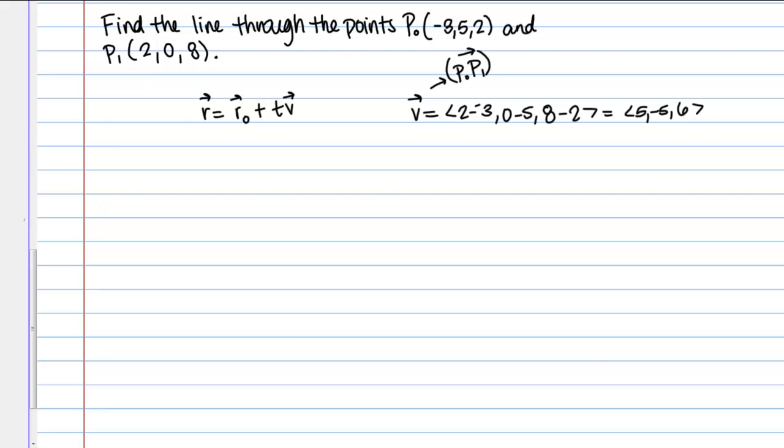From here, I'm basically doing what I would do in any other equation of the line problem. I have my point P₀, so from that I can write down R₀. R₀ is just the vector that goes between the origin and point P₀, so its components are just <-3, 5, 2>. Then I just plug into my formula because I have R₀ and I have vector V.